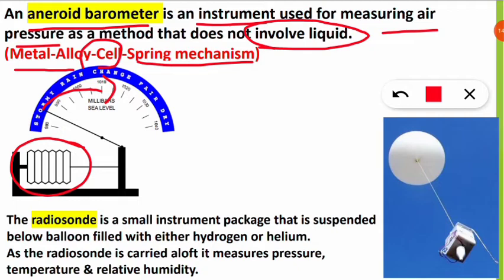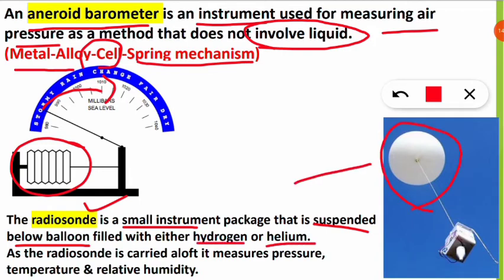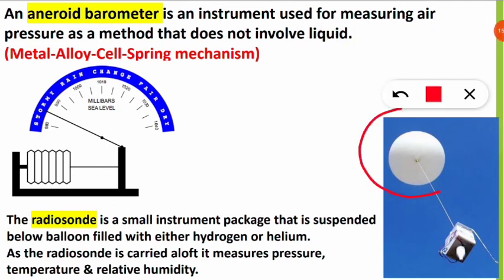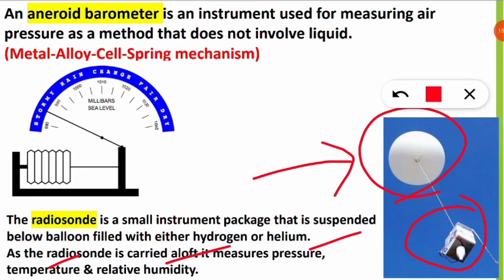One more important instrument is the radiosonde — a small instrument package suspended below a balloon filled with hydrogen or helium gas. The balloon carries the radiosonde from ground level up into the upper atmospheric layers. This instrument measures pressure, temperature, and relative humidity of that place. The balloon is only the carrier; the radiosonde collects all the data.